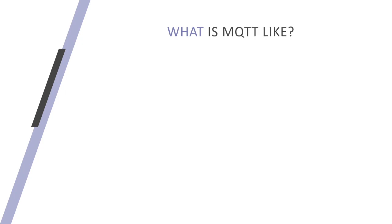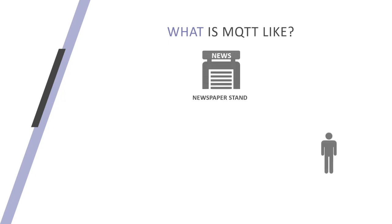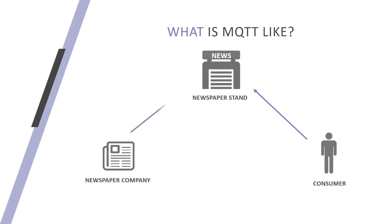Let's compare MQTT to a real-world day-to-day example. A newsstand is a place where a consumer can go and buy newspapers and get the latest news available. The newspaper company prints and publishes the news and provides it to the newsstand — in this case the newspaper company becomes the publisher. The consumer becomes the subscriber. The information is passed from the publisher to the consumer through a common broker.